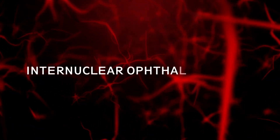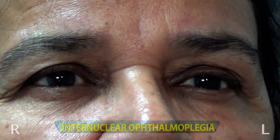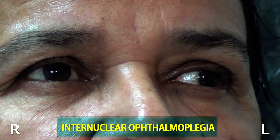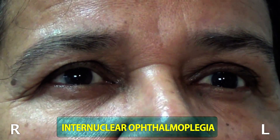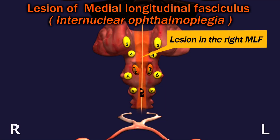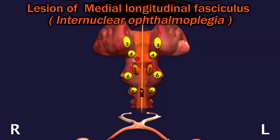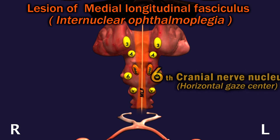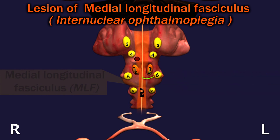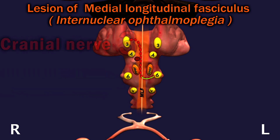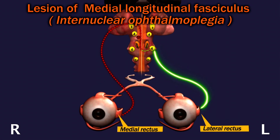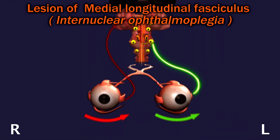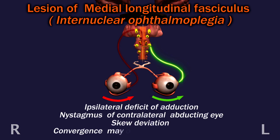Let us have a look at internuclear ophthalmoplegia. This is a patient with right-sided internuclear ophthalmoplegia showing deficit in right eye adduction with nystagmus of the abducting left eye. Internuclear ophthalmoplegia on the right side, due to a medial longitudinal fasciculus lesion on the same side, will not send impulses to the ipsilateral third nerve nucleus, causing a deficit of adduction in the right eye and nystagmus of the contralateral abducting eye. Convergence may overcome the adduction deficit.